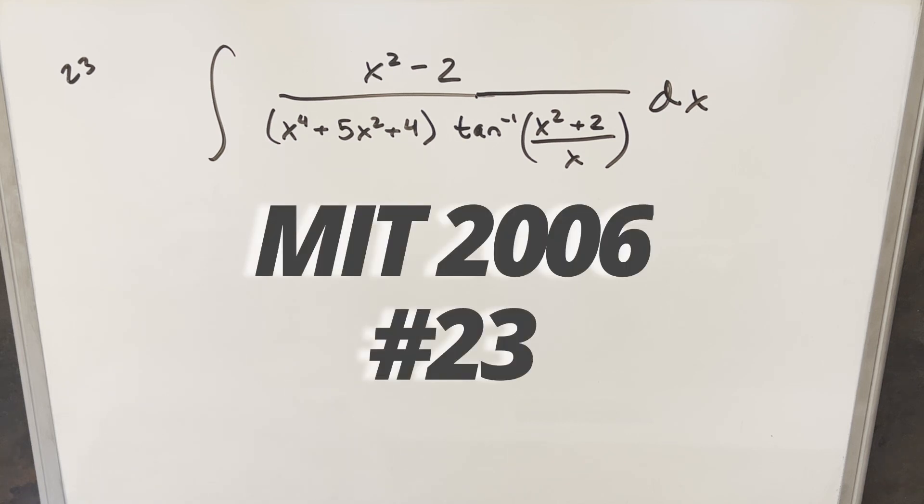Okay, we have here today a pretty crazy looking integral from MIT 2006, problem 23. We have the integral of x squared minus 2 over x to the 4th plus 5x squared plus 4 times arctan x squared plus 2 over x dx.